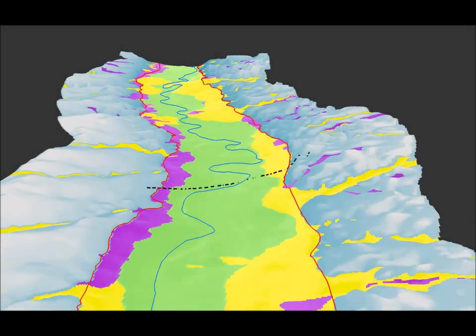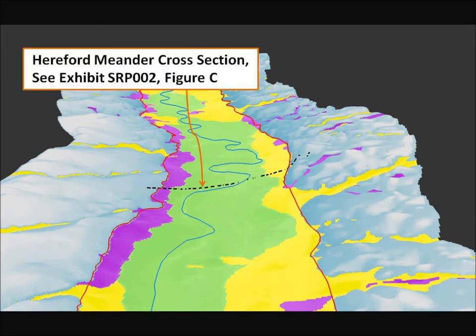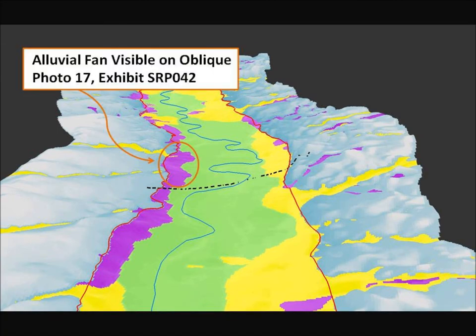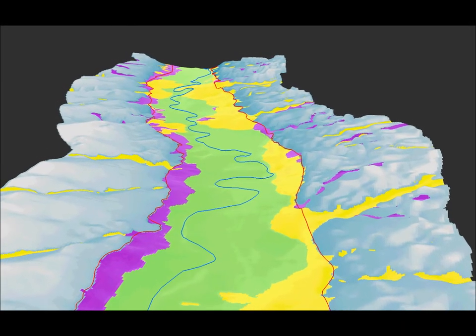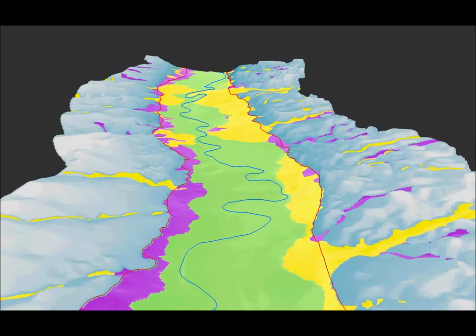The Hereford Meander cross section is shown by the dashed line. This is the area where the United States drilled three holes in 1994 as shown on exhibit SRP-045. My interpretation of the subsurface geology in this area is shown on exhibit SRP-002, figure C. This is also the area of oblique aerial photographs 16 and 17 of exhibit SRP-042. The alluvial fan in the circle is pointed out on the caption of oblique aerial photograph 17.